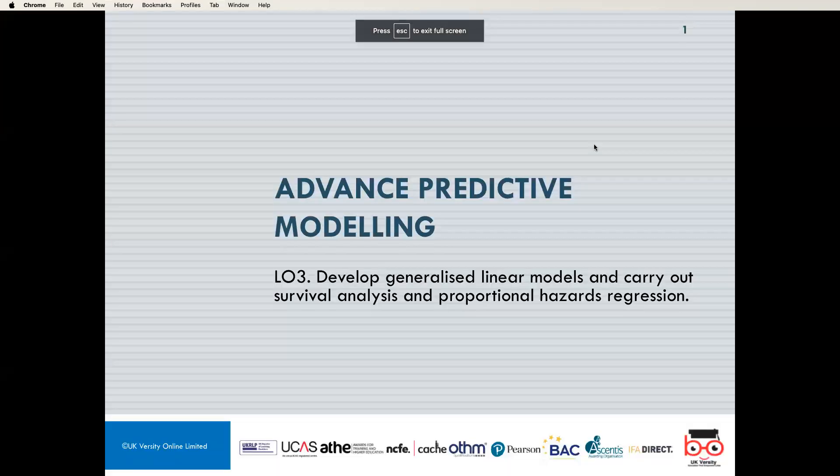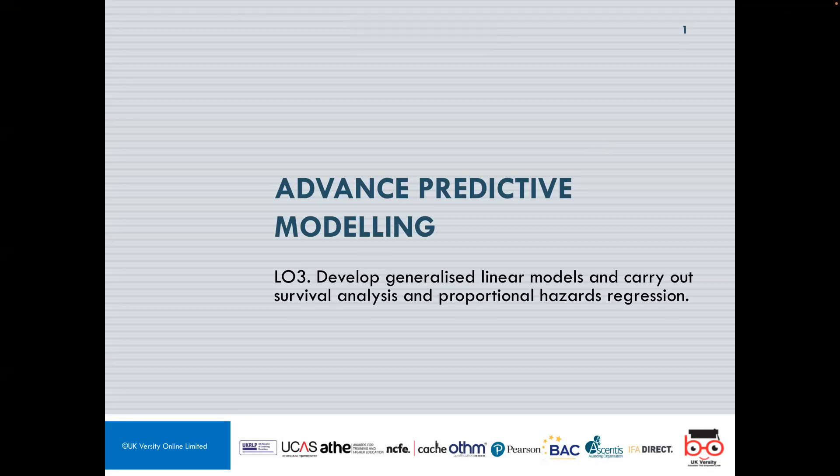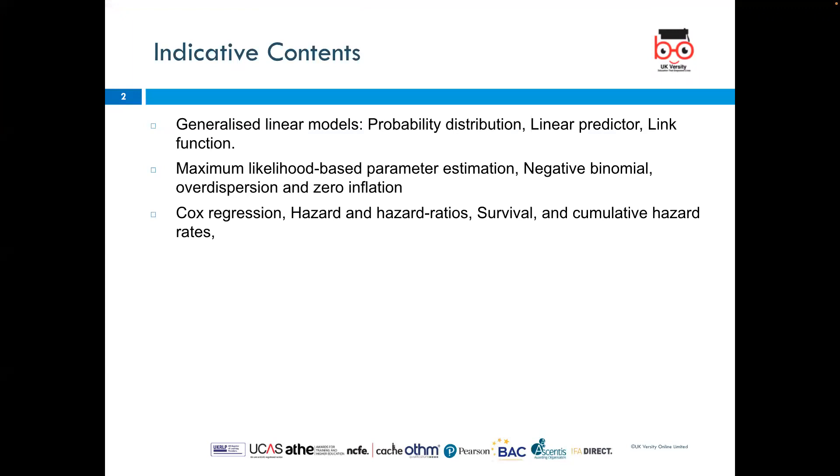But today we'll be looking at developing generalized linear models and carrying out survival analysis and proportional hazards regression. These are the indicative contents which includes generalized linear models, probability distribution, linear predictor, link function, maximum likelihood based parameter estimation, negative binomial over-dispersion and zero inflation, Cox regression, hazard and hazard ratios, survivor and cumulative hazard rates.